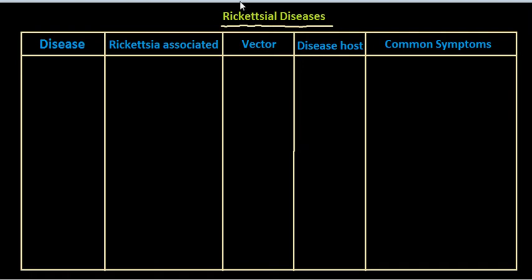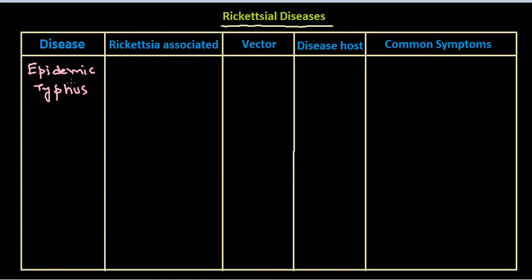Let's begin with the first and most common disease caused by rickettsias: it is called epidemic typhus, or common typhus. This is a very dangerous condition that has taken many lives. The rickettsia associated with this type of condition is Rickettsia prowazekii — that is the causative agent.